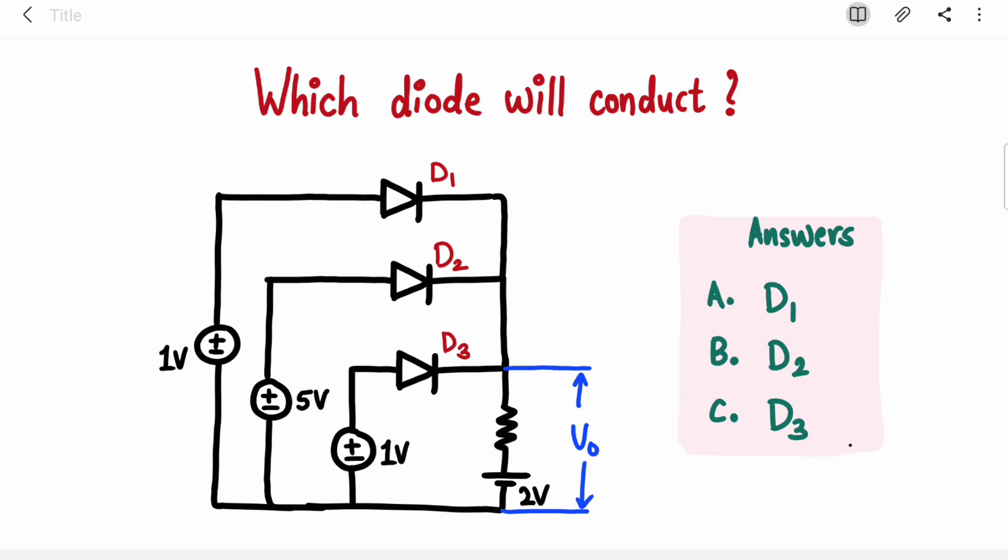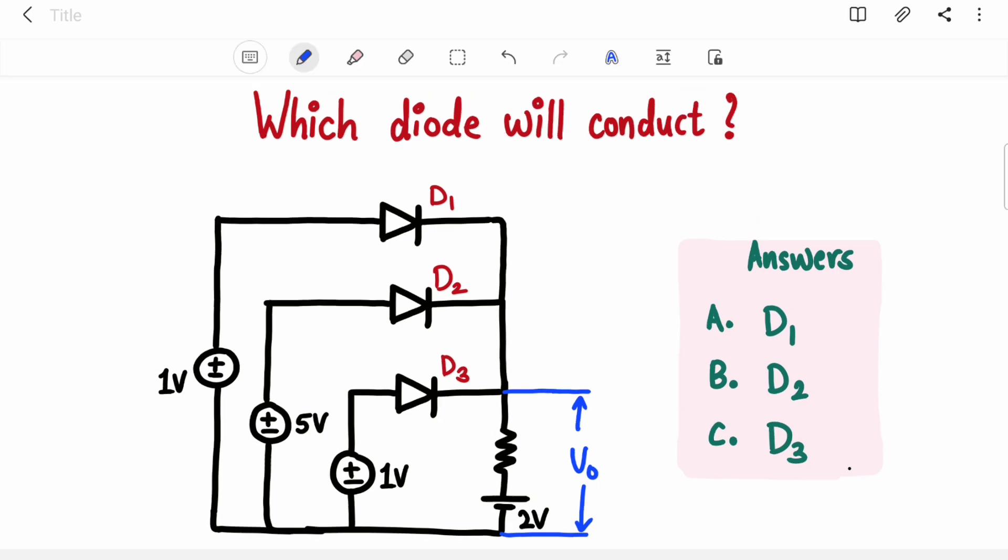So today we are going to solve this question. There is a circuit with three diodes and three voltage sources with one tiny resistor and a battery of two volts. The question is about which diode will conduct—D1, D2, or D3—and then we will find out what will be the value of Vo.